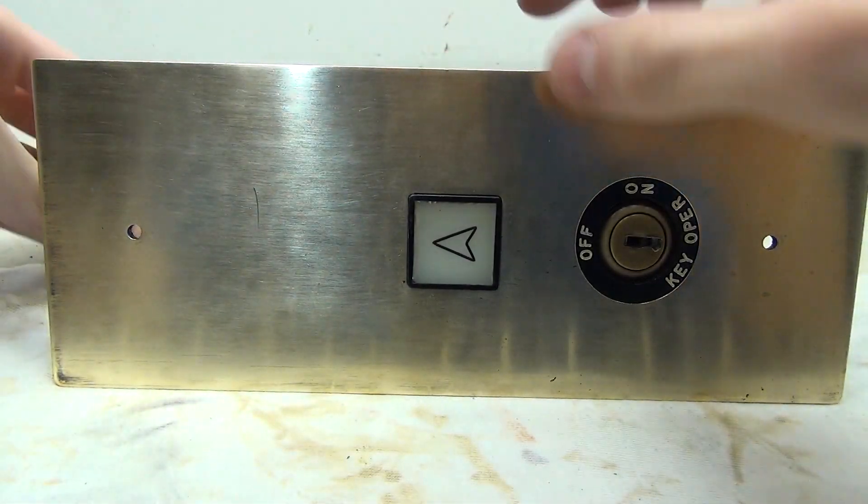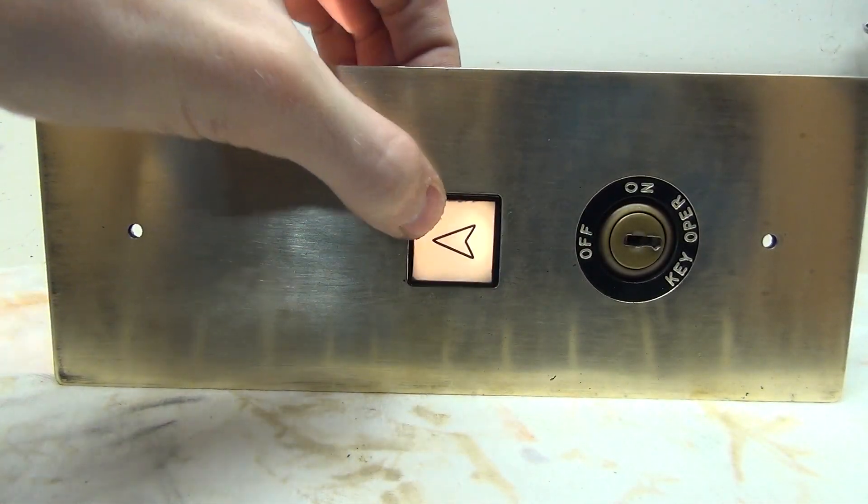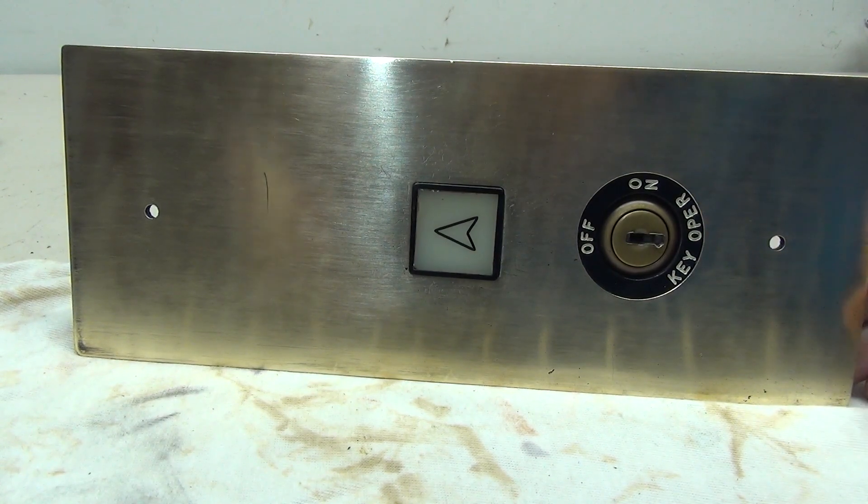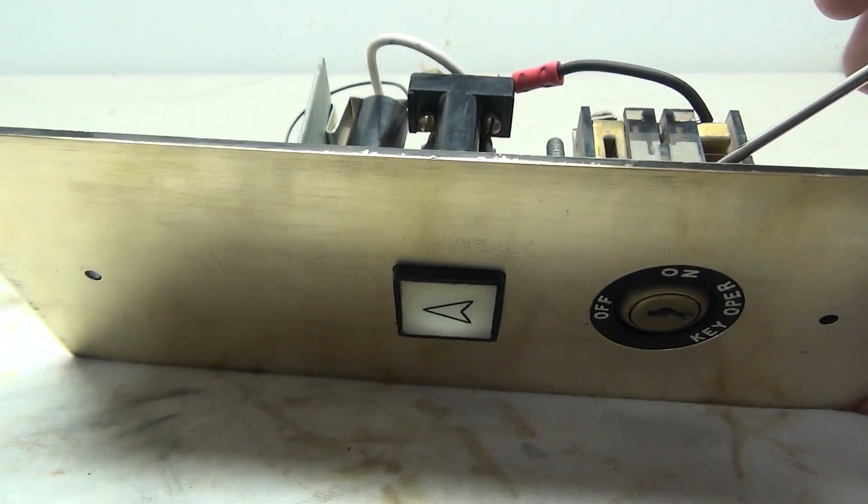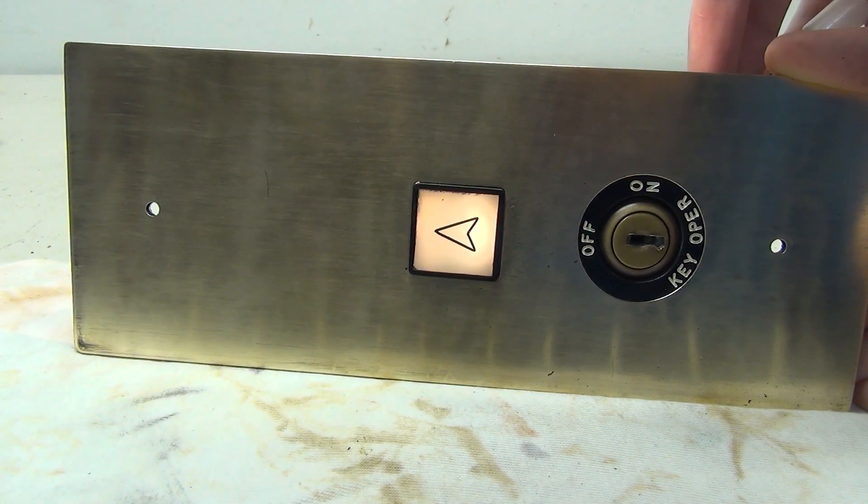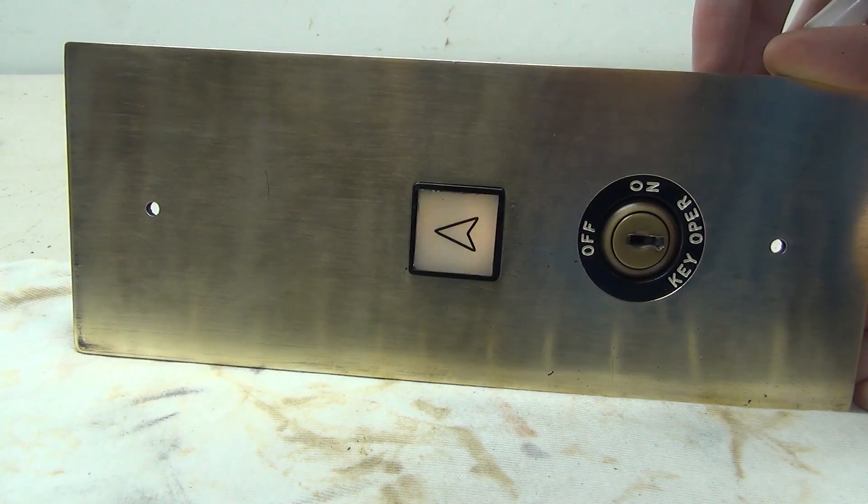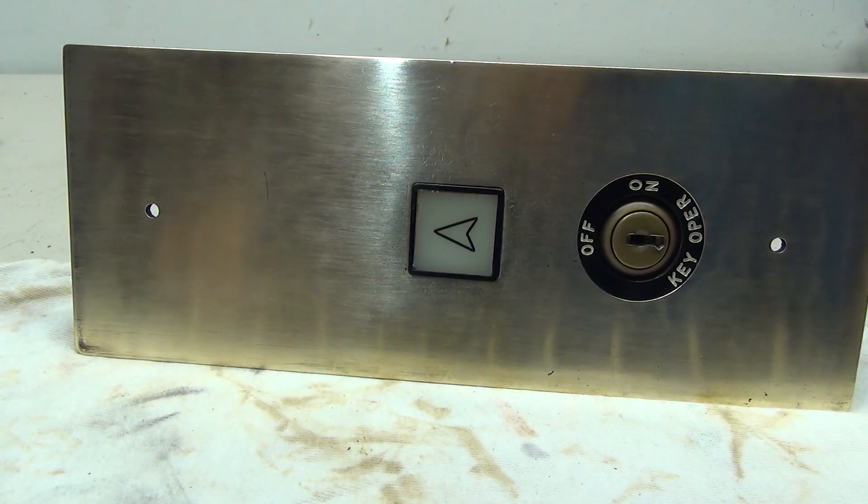I always like to do a quick test of the button to make sure it works. So you can see here when I press the button, it lights up nice and bright. Now as for the key switch, I currently don't have this key handy on me, and I really don't feel like going to get it. So I'm just going to cheat a little bit and manually activate the contact on the back here just by pressing it down. And you can see as I do that, it lights up. So I know that when I put the key in here and turn it, it will light up.